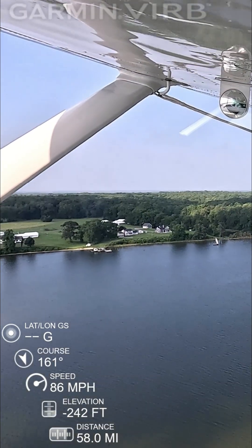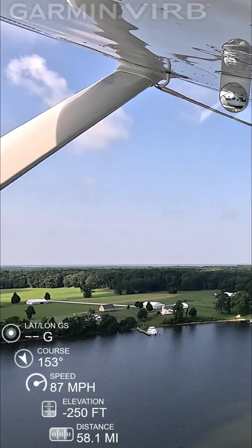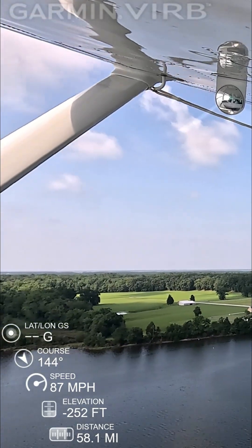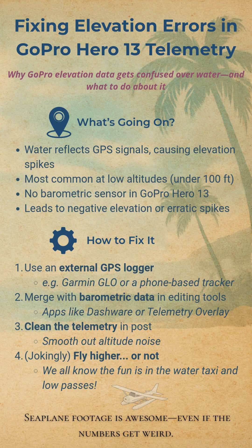If you've ever tried overlaying telemetry on seaplane footage, you've probably run into this too. There are a few ways to work around it though. First, using an external GPS logger — like a Garmin Glow or even a phone app — can give you more accurate elevation data. You can also combine GPS with barometric altitude from another device; some editing tools let you sync the two for better results. Another option is cleaning things up in post-production — apps like Dashware or Telemetry Overlay can smooth out those jumpy readings.